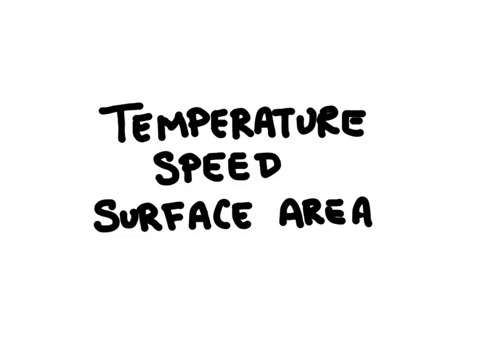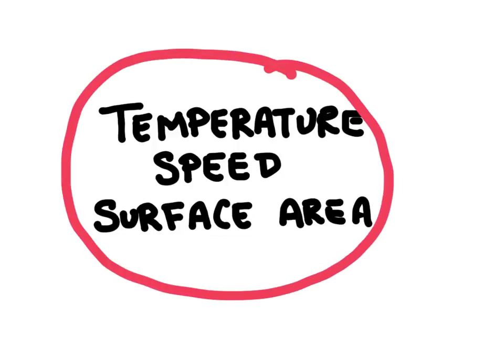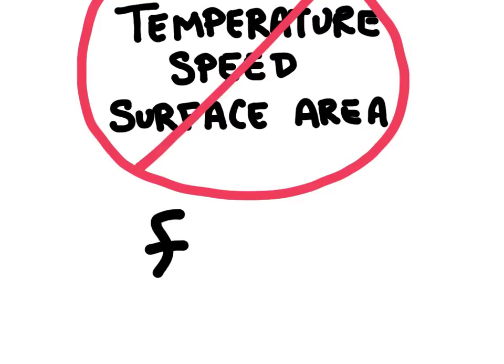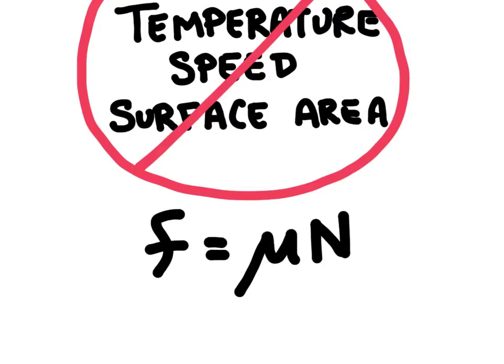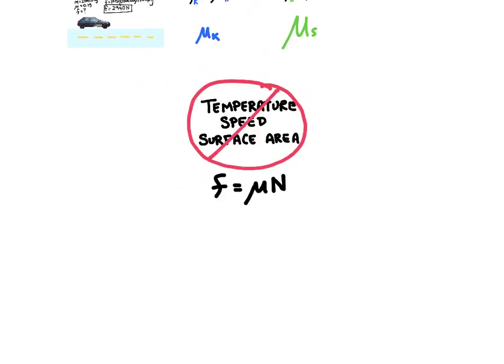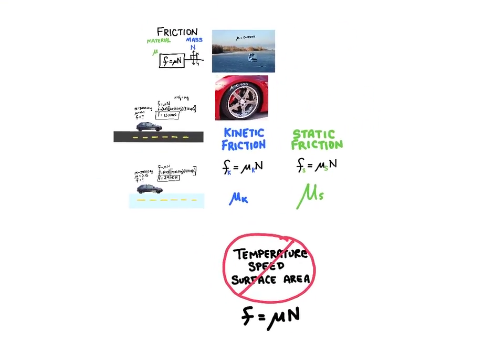One last thing: friction does not depend on temperature, speed, or surface area of the object. That means the force of friction is going to remain the same no matter what speed the object is moving at, no matter what the temperature is, and no matter how much of the object's surface is actually touching the other surface. When we look at the equation — force of friction equals the coefficient times the normal force — none of these three factors play a role in that equation. And that is friction.